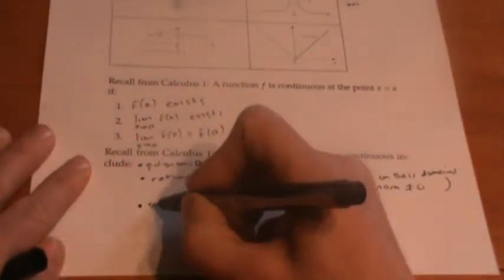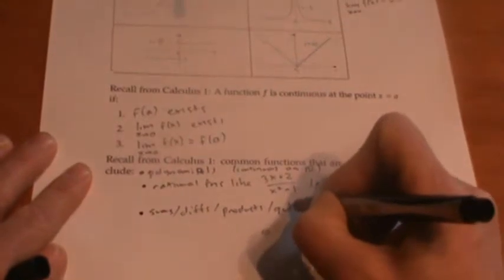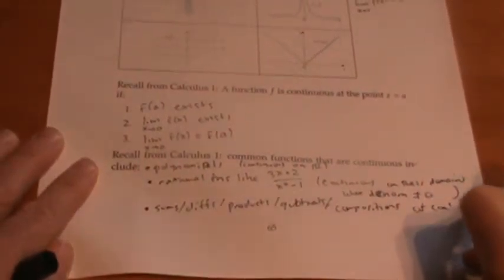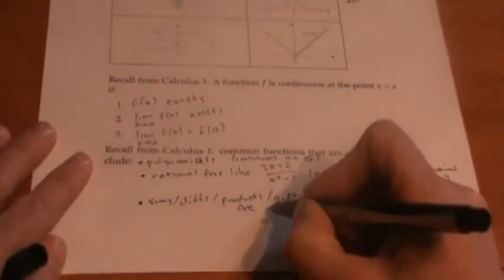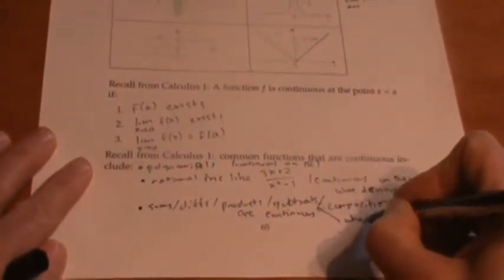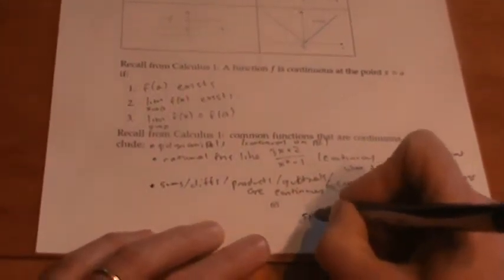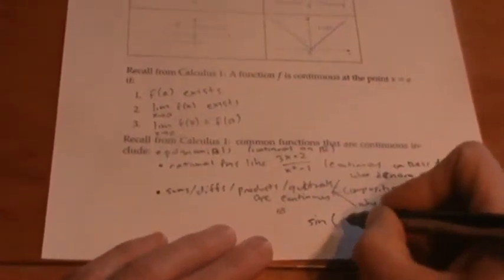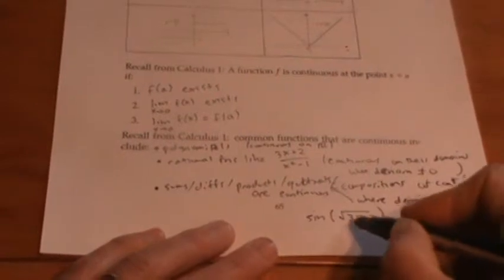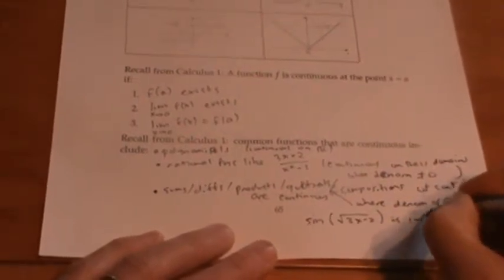In addition, if you take sums, differences, products, quotients, and compositions of continuous functions, those are also continuous — being careful with quotients that you don't divide by zero. As an example, sine of the square root of 3x minus 2 is a composition of a polynomial, a square root, and a sine function, all continuous on their domains, so this is continuous on its domain.